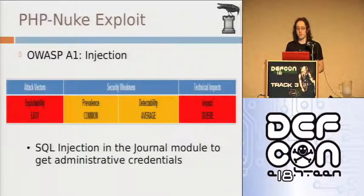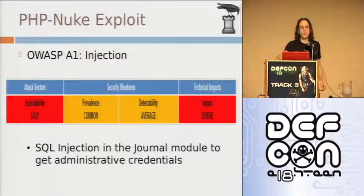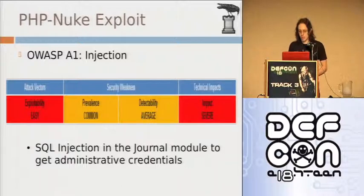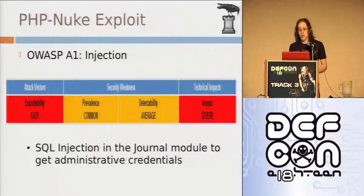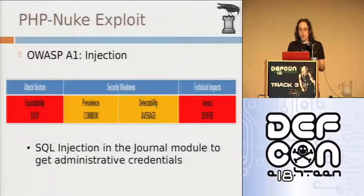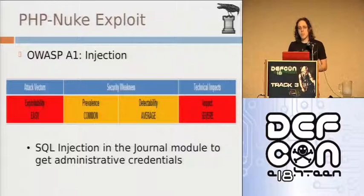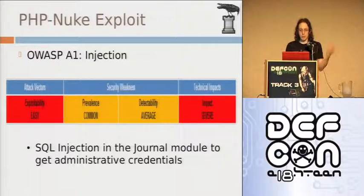OWASP A1 injection - exploitability easy, yes very easy. Impact severe, yes. Detectability average - in this case, if you fire off a canned tool like Acunetix or the open source WPD, you will not find this vulnerability. Instead I found it using more of a manual source code analysis. It turns out they have a function call called 'filter' - if you pass in filter with one, it handles both XSS and SQL injection, which is terrible. When I see this behavior it's an immediate red flag. These two vulnerabilities have very little in common and share almost no control characters - you should not be mixing these two filters. By passing in one, it would still prevent XSS but it made it vulnerable to SQL injection. I wrote a simple regular expression to find any case where filter was being passed one, and that's how I found this.